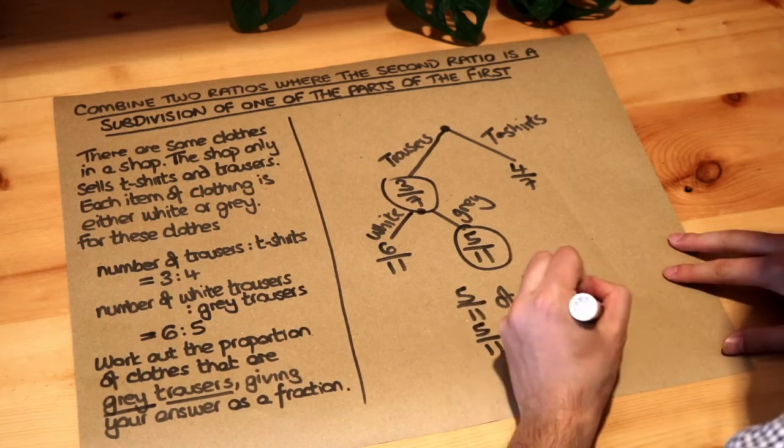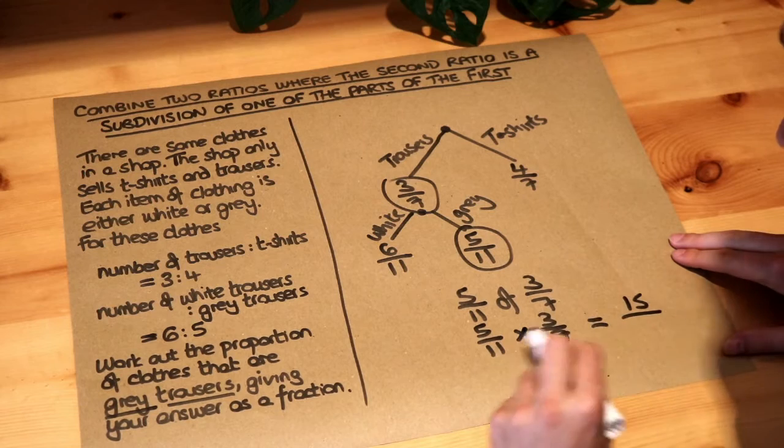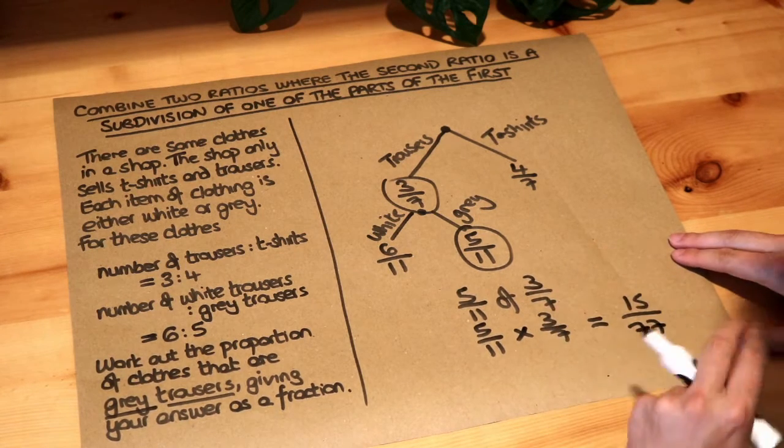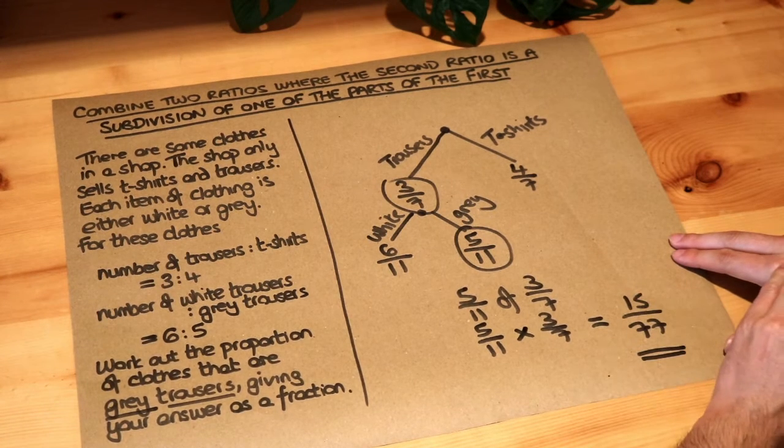To multiply fractions together, we multiply the numerators. 5 times 3 is 15. And we multiply the denominators. 11 times 7 is 77. We can't simplify that fraction any further. So that is the final answer: 15/77.